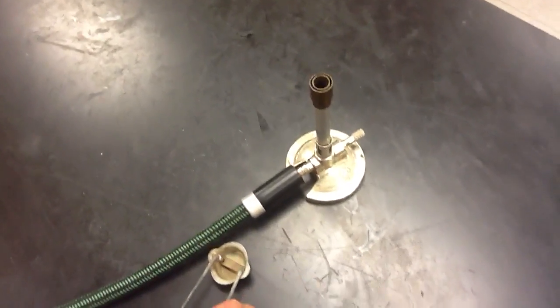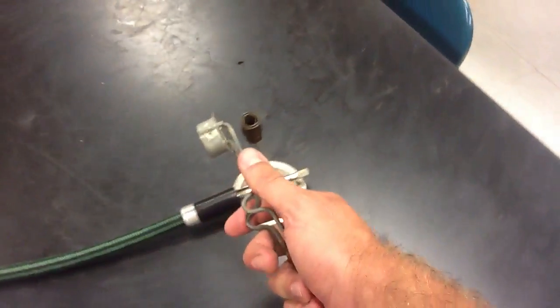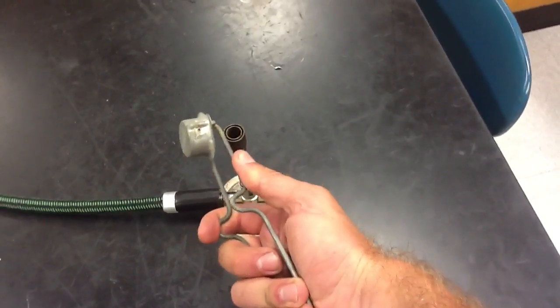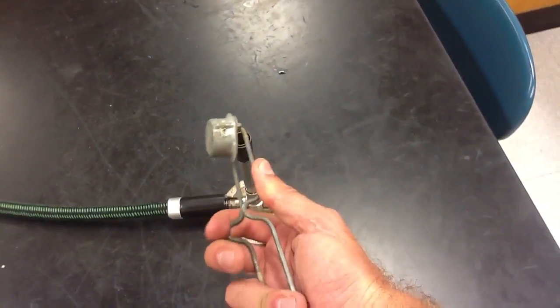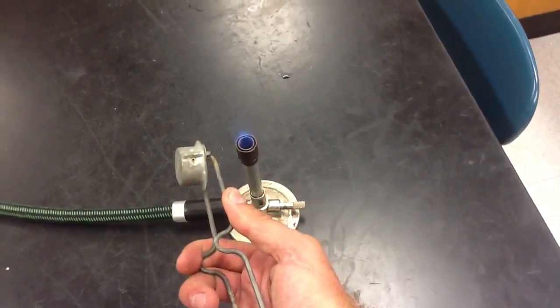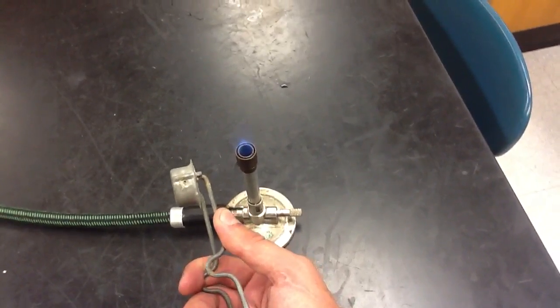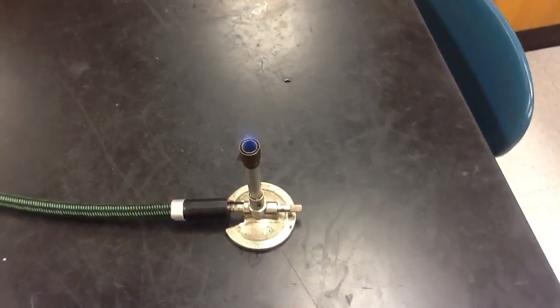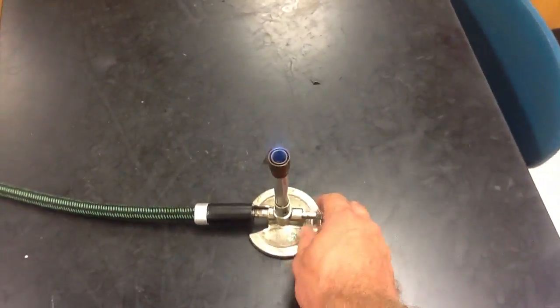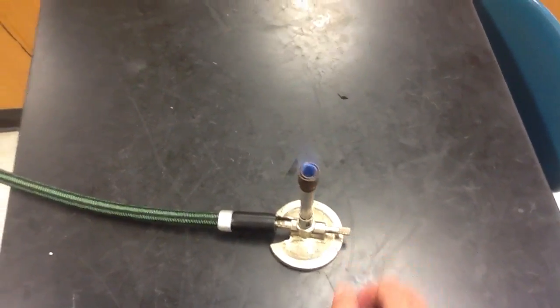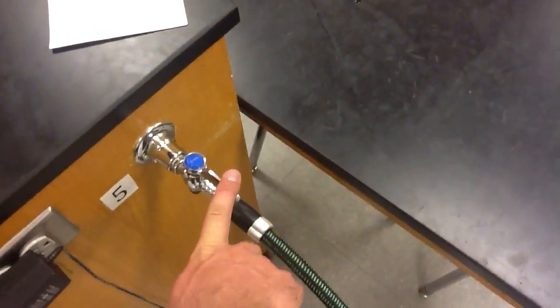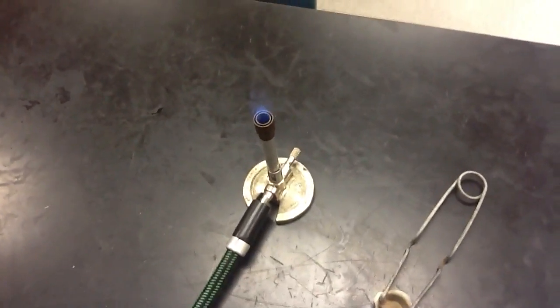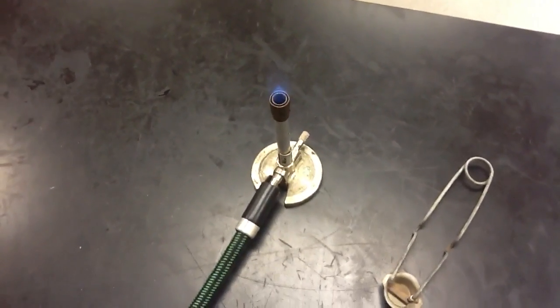Next thing you want to do is grab your striker. Turn it to the side a little bit next to the burner. Push down and across until you have the light. Once it's lit, you can adjust it here or over here. Now that it's lit, you can do what you need to do with the burner in your experiment.